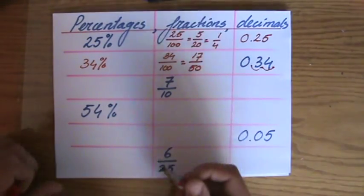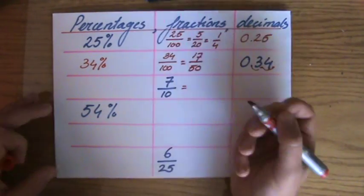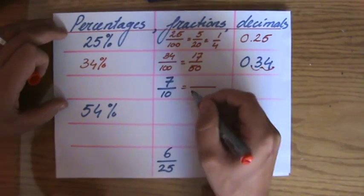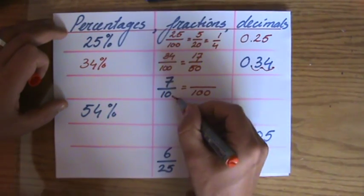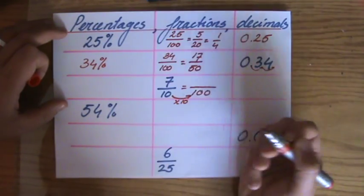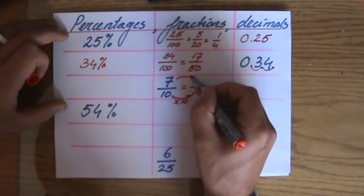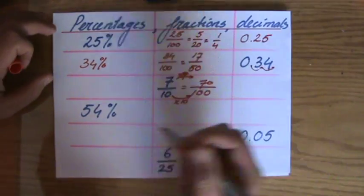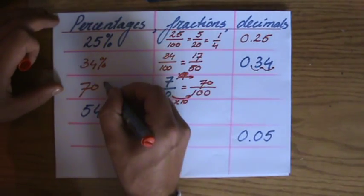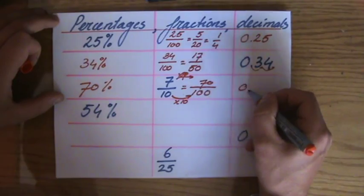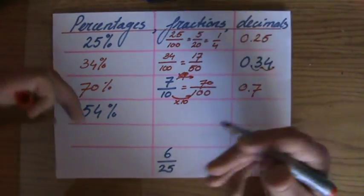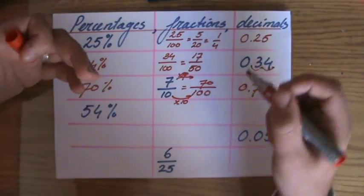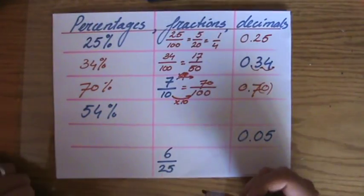7 tenths — perhaps a little bit more difficult. However, if you understand that percentage means out of 100, I've got to find the equivalent fraction out of 100. Multiply both by 10: that gives 70 out of 100, which makes it 70%. And for the decimal, you can just say 0.7 — 0.7 has 7 tenths, which is sufficient.